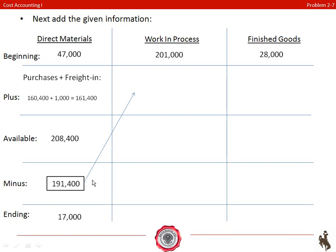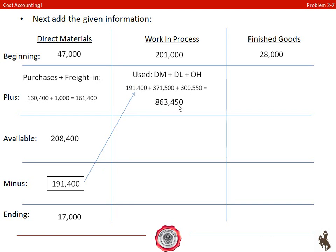The 191,400 of direct materials used flows up to the work in process inventory. If we take our direct materials used, our direct labor, and our overhead, we come up with 863,450. Adding this — which is all the direct materials, labor, and overhead used — to our beginning work in process balance, we have 1,064,450 available in our work in process.